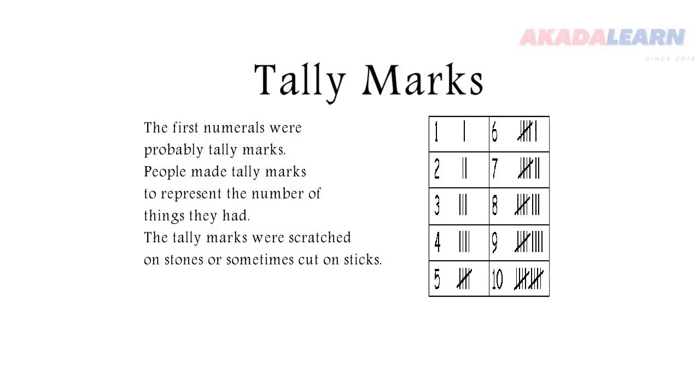So for example, if we want to write 12 now, it will be 2 strokes of 5, then 2 attached to it in the front.